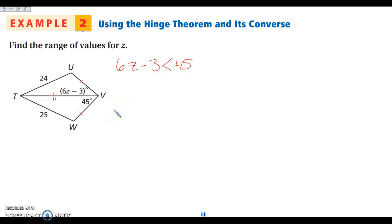The other inequality that I'm going to set up is that I know that in order for this to be an angle, for the angle to exist, it has to be greater than zero. So then I know that 6z minus 3, the measure of that angle, must be bigger than zero. So these are the two inequalities that I'm going to solve. We're going to add 3 to both sides here. We're going to get 6z is less than 48. And when I divide both sides by 6, I get that z has to be smaller than 8.